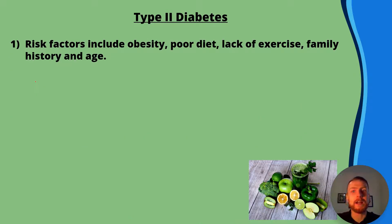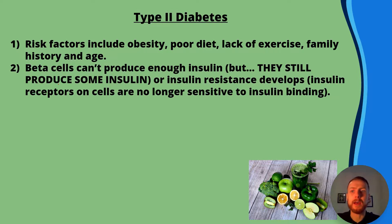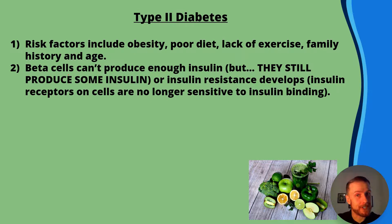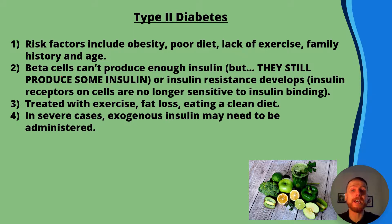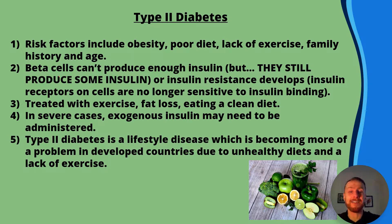Type 2 diabetes risk factors include obesity, poor diet, lack of exercise, family history, and age. It's often seen as preventable. In type 2, beta cells can't produce enough insulin — the key difference is that they still produce some insulin. Additionally, insulin resistance can develop where insulin receptors on cells are no longer sensitive to insulin binding. This can be treated with exercise, fat loss, or eating a clean diet. In severe cases, exogenous insulin may need to be administered. Type 2 diabetes is a lifestyle disease becoming more prevalent in developed countries where obesity and sedentary lifestyles are more common.